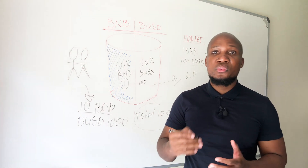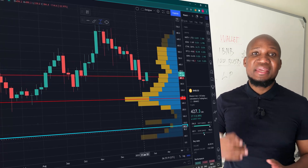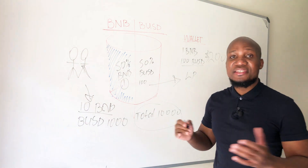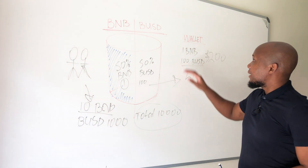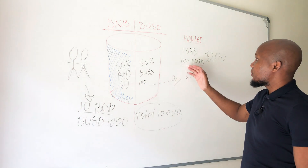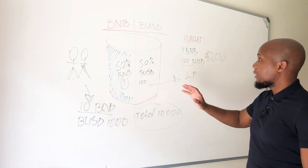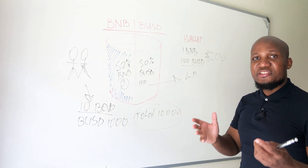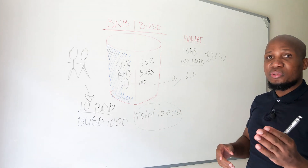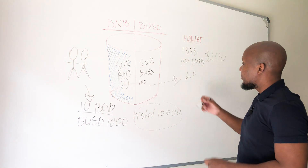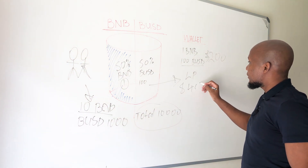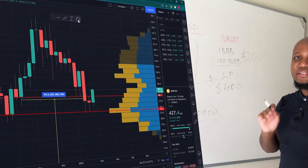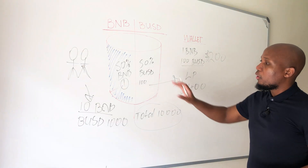Now let's fast forward to 12 months later. We can see that the price of BNB has actually gone up in value — it went up by 280%. That means the ratio of this pool has changed. Remember, in the beginning we put one BNB and $100 into the pool, for a total value of $200. But now that BNB has gone up 280%, it is trading at $400. Because BNB is now trading at $400, the ratio of this pool has changed.